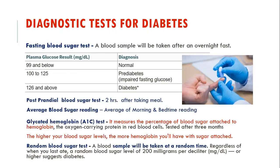Let's look at different diagnostic tests for diabetes. The fasting blood glucose test is generally used by clinicians, where a blood sample is taken after overnight fasting. A sugar level of 99 and below is considered normal; 100 to 125 mg per deciliter is pre-diabetic, indicating impaired fasting glucose; and above 126 is called diabetes. The post-prandial blood sugar test takes a reading 2 hours after breakfast or a meal. Average blood sugar level is the average of morning and bedtime blood sugar level readings.